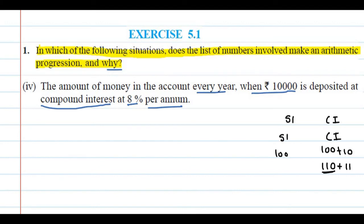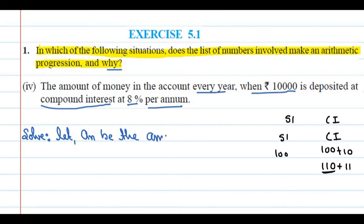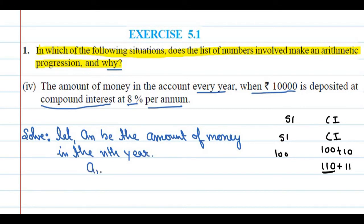Now let's solve this question. Let aₙ be the amount of money in the nth year. In the first year, you have just deposited the amount, so a₁ = 10,000. When one year is complete, we look at the second term.